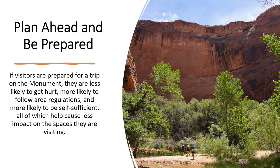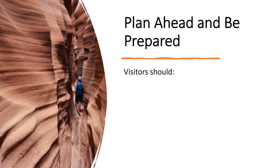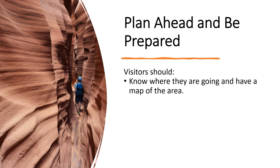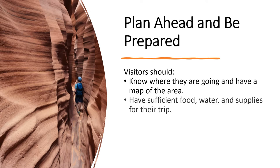Before coming to the monument, visitors should plan ahead and be prepared. If visitors take time to prepare for a trip to the monument, they are less likely to get hurt, more likely to follow area regulations, and more likely to be self-sufficient — all of which help cause less impact on the spaces they are visiting. Visitors should know where they are going and have a map of the area, and should have a general sense of landscape and environmental conditions. They should have sufficient food, water, and supplies for their trip — what is sufficient depends on the season or forecasted conditions, so visitors should plan accordingly and consider bringing extra supplies in case of unexpected weather or delays.